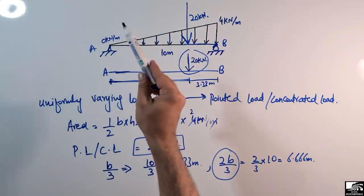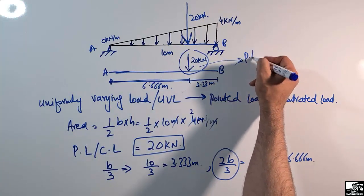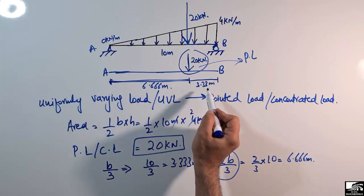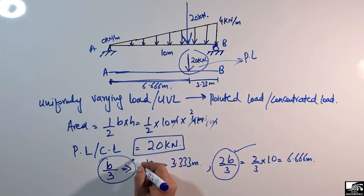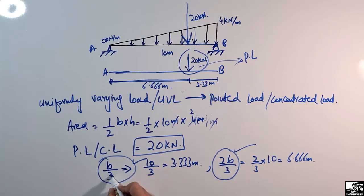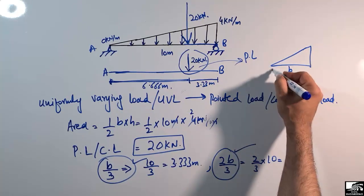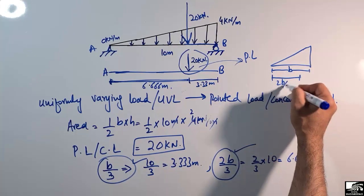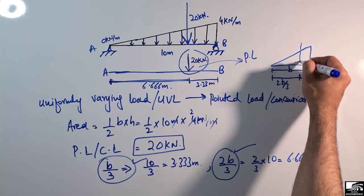So we convert the uniformly varying load into a concentrated load of 20 kN acting at 6.666 meters from the left and 3.333 meters from the right. The positions b/3 and 2b/3 come from the centroid formula for a triangle. For a triangle of total width b, the centroid is located at 2b/3 from the smaller end and b/3 from the larger end.